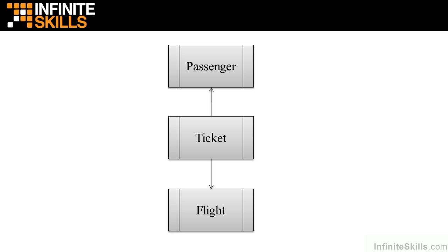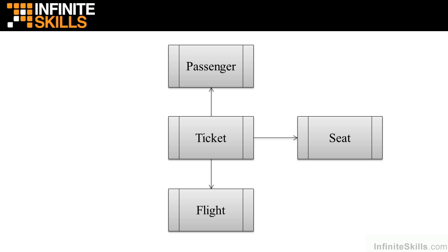And finally, when you purchase a ticket, you are also reserving your seat. Now this is one place where we are really simplifying this system — we only own one airplane, and that airplane has six seats on it. In a commercial reservation system, each flight might involve a different airplane with different seating arrangements, so we would need classes for the aircraft, the seating layout, and so forth. Since we only have one airplane, those six seats will be the same for every flight, and so we will just link them directly to the ticket.